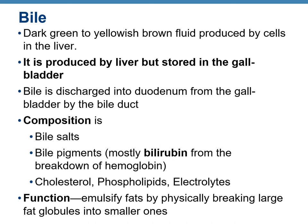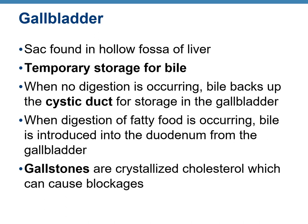Bile is a greenish to yellowish-brown fluid produced by liver cells, stored in the gallbladder, and discharged into the duodenum via the bile duct. It is made up of bile salts, bile pigments such as bilirubin or biliverdin, cholesterol, phospholipids, and electrolytes. The function of bile is fat digestion — it emulsifies fat by breaking it into small particles. The gallbladder is a small sac-like structure serving as a temporary reservoir for bile. Gallstones are crystallized cholesterol that can cause painful blockages.